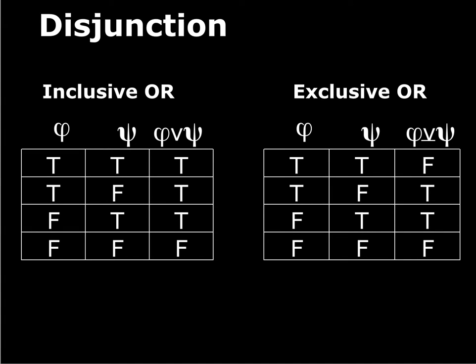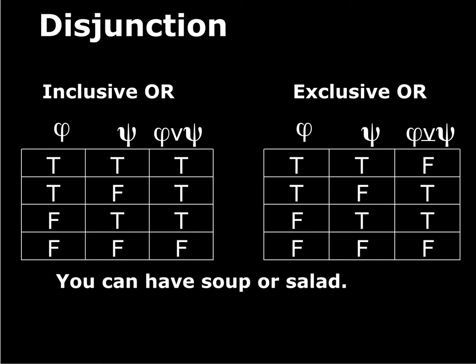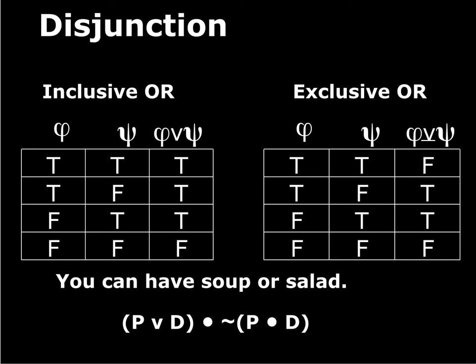For purposes of this class, whenever we talk about disjunction it's always inclusive or, so we can forget the exclusive or symbol and truth function. If you want to express the exclusive case — like 'you can have soup or salad' — you can say: P or Q, and not (P and Q). So not both. That gives you exactly the same truth function. We're not losing any expressive power by only keeping inclusive disjunction as one of our operators.